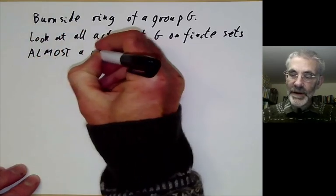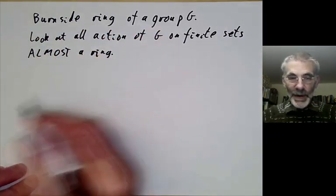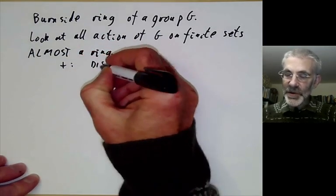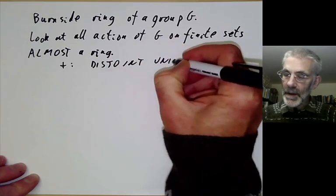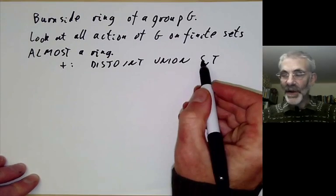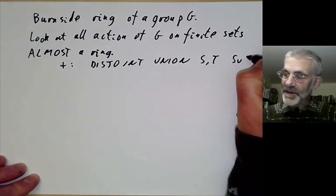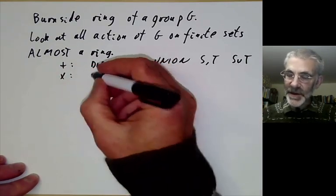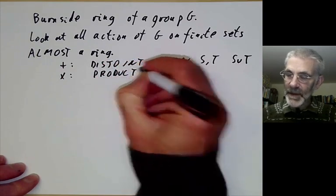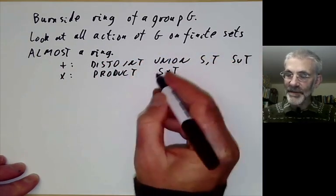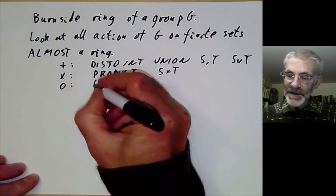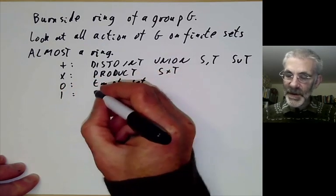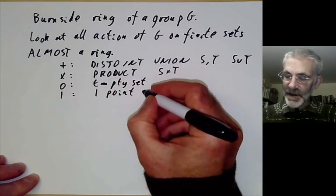Let's see how we define addition and multiplication. Addition is going to be disjoint union. If we've got sets S and T acted on by G, we take the disjoint union as the sum. Multiplication is the product S×T. Zero is the empty set and the unit is the one point set acted on trivially by G.